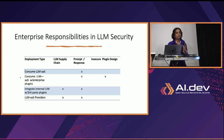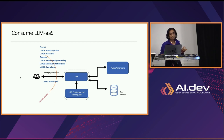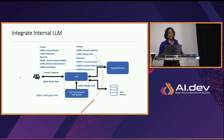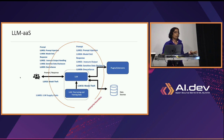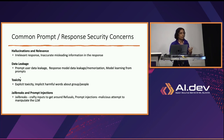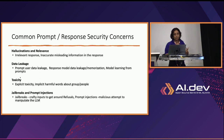For the next four slides, focus on the red bar showing the enterprise boundary, and see where prompt-response security is something an enterprise can enforce — whether they are consuming a large language model as a service, have their own enterprise plugins, build their own large language model, or are a provider of large language model as a service. Common prompt-response security issues include hallucination and relevance, data leakage, toxicity, jailbreak, and prompt injections.